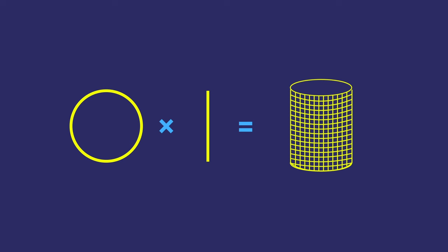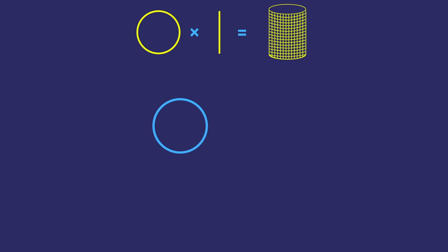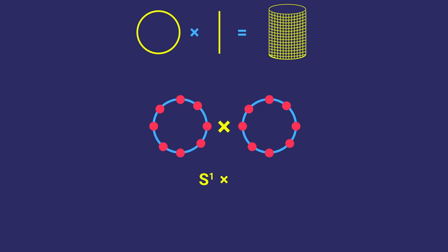Here's a tougher one: what's a circle times a circle? By circle, I just mean the points that make up the perimeter, not the inside. A circle, when just referring to the perimeter, is called S1 in the world of mathematics. So I can write the multiplication like this.